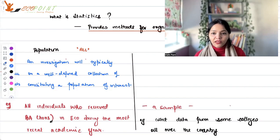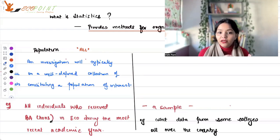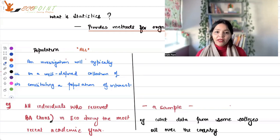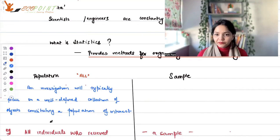And that's the reason, since it is very impractical, what we instead do is try to find out samples. Now, sample would be a subset of population. And again, the object of interest, your interest is getting the data for individuals who are receiving BA economics honors degree in the most recent academic year.